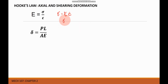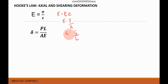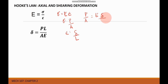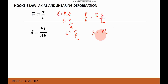We know that stress equals force divided by cross-sectional area, and strain equals total elongation over original length. Substituting into Hooke's law: load over area equals E times deformation over length. Therefore, deformation (delta) equals the load multiplied by the original length, divided by the cross-sectional area multiplied by the modulus of elasticity: δ = PL/AE.